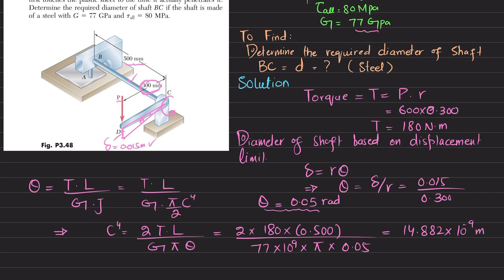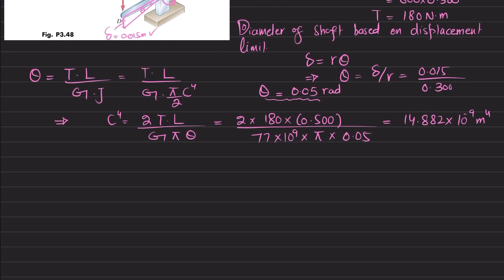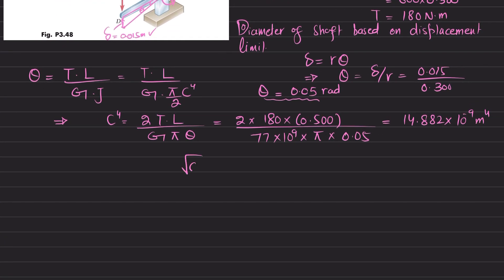If you take the fourth root of c to the fourth and fourth root of 14.882 times 10 to the minus 9, you will get the value of c, which is 11.045 times 10 to the minus 3 meters.